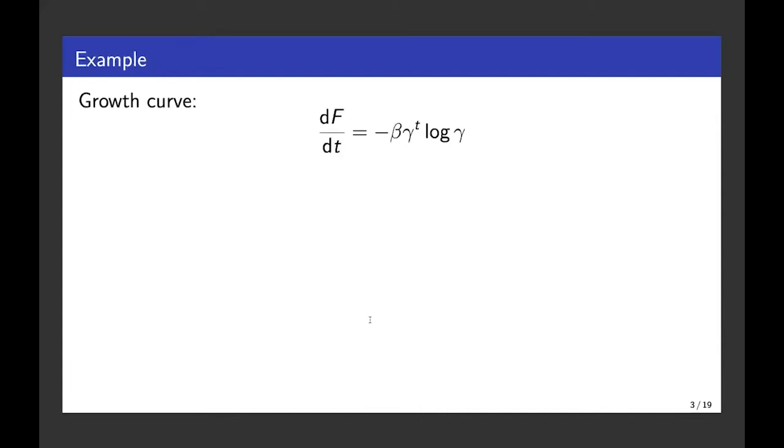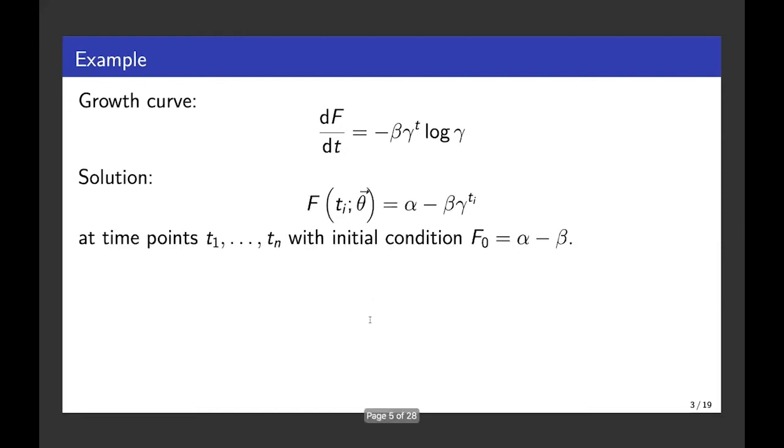So the first example that I'm going to show is this growth curve. And in this case we can actually solve this equation analytically. So this is our function F. And we're going to observe that at these time points t1 up to tn. And then the initial value of this function is just going to be alpha minus beta.